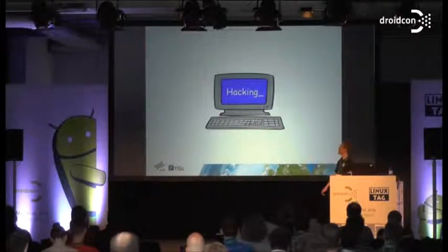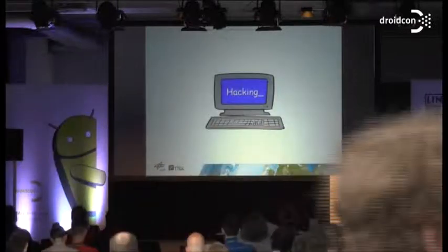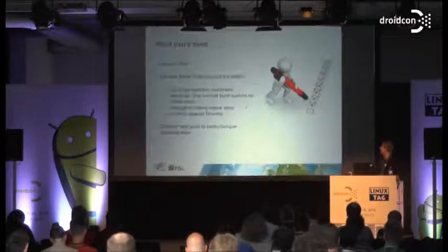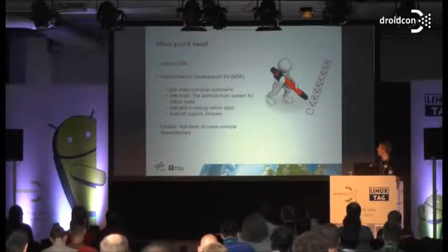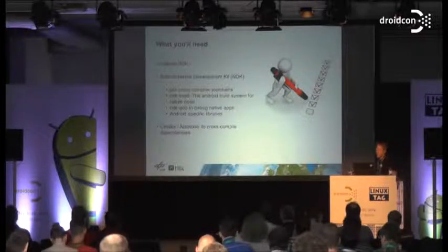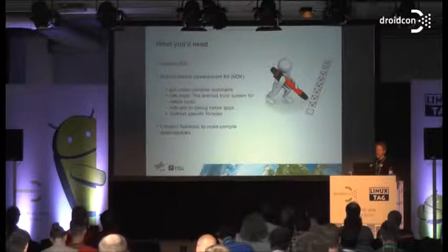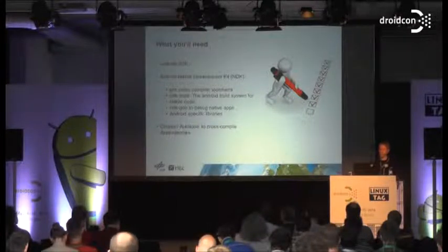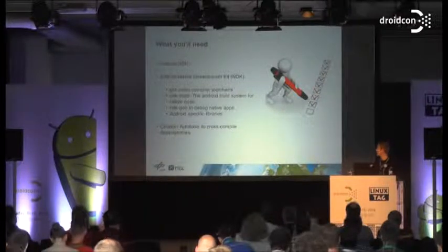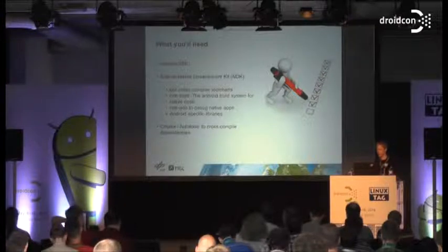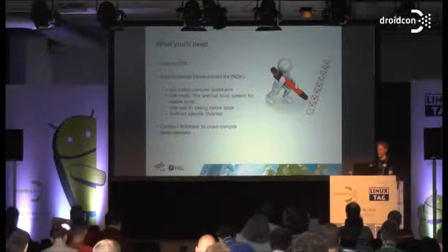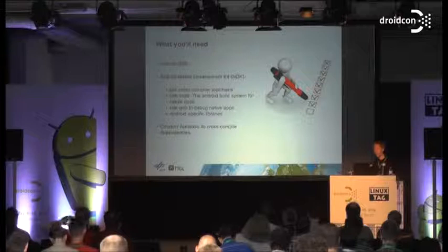Now let's talk about the hacking — the steps we went through. Here's a short checklist of what you need for development. You need the Android SDK, and in addition the Android Native Development Kit, called the NDK. It consists of cross-compilers like GCC, a small tool called NDK-build which is based on make files, and a debugger based on GDB. It also includes Android-specific libraries to talk to the Android backend — for example, for logging or accessing sensors. When importing third-party libraries, you also need CMake or whatever those libraries require.